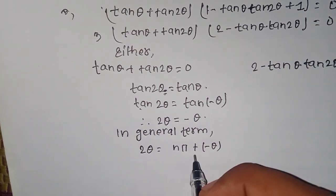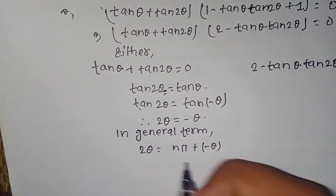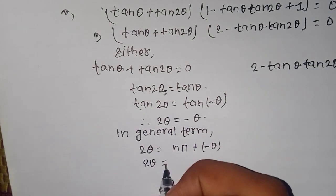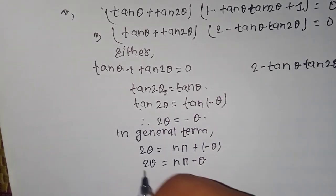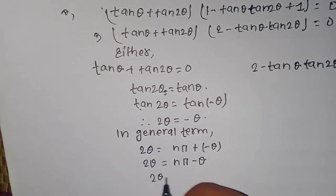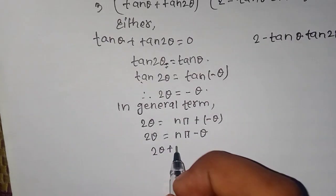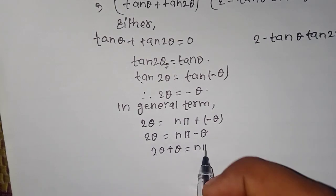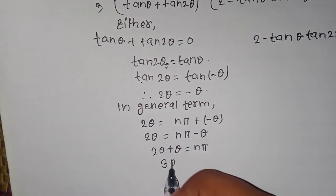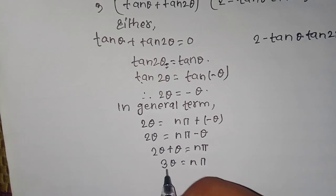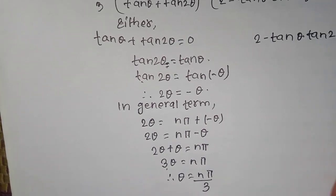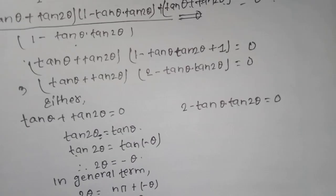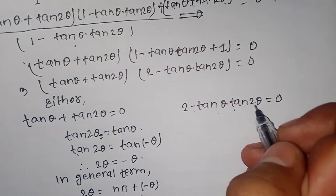It's not minus, it's plus or minus. 2-theta equals to 2*pi. So one*pi minus theta. Therefore 2-theta plus theta equals to one*pi, giving us 3-theta equals one*pi.